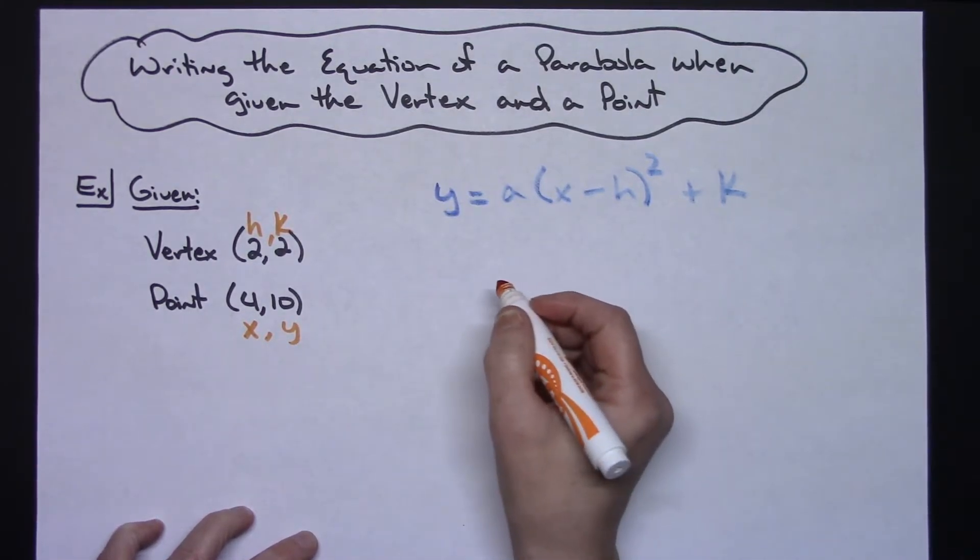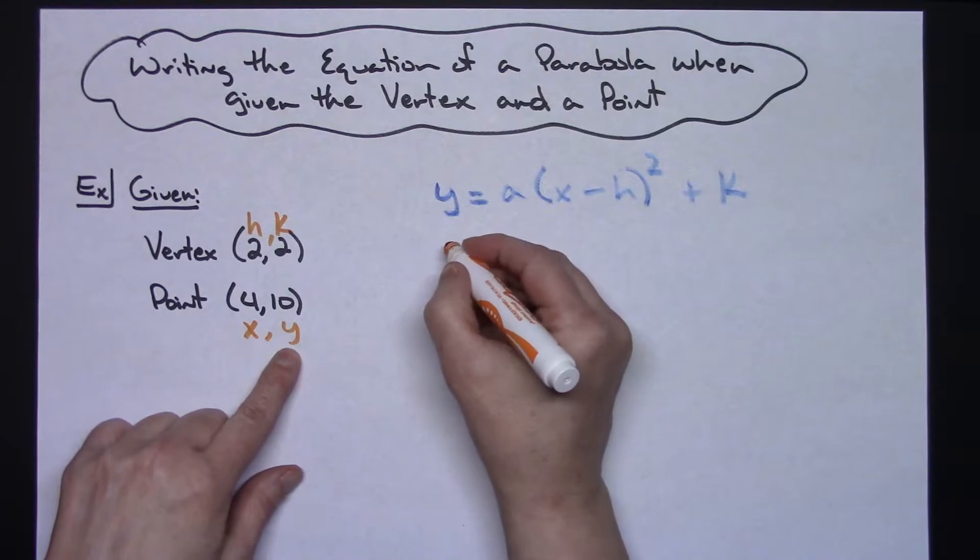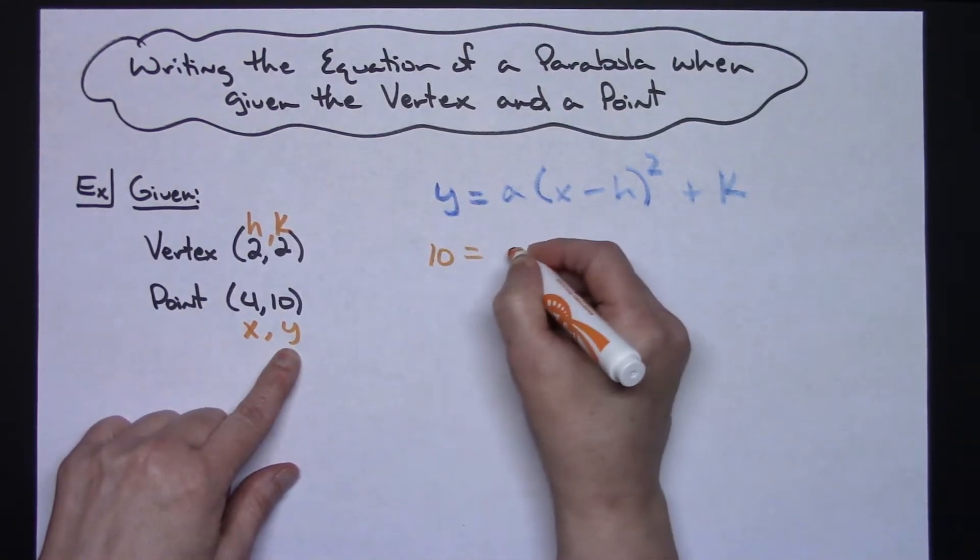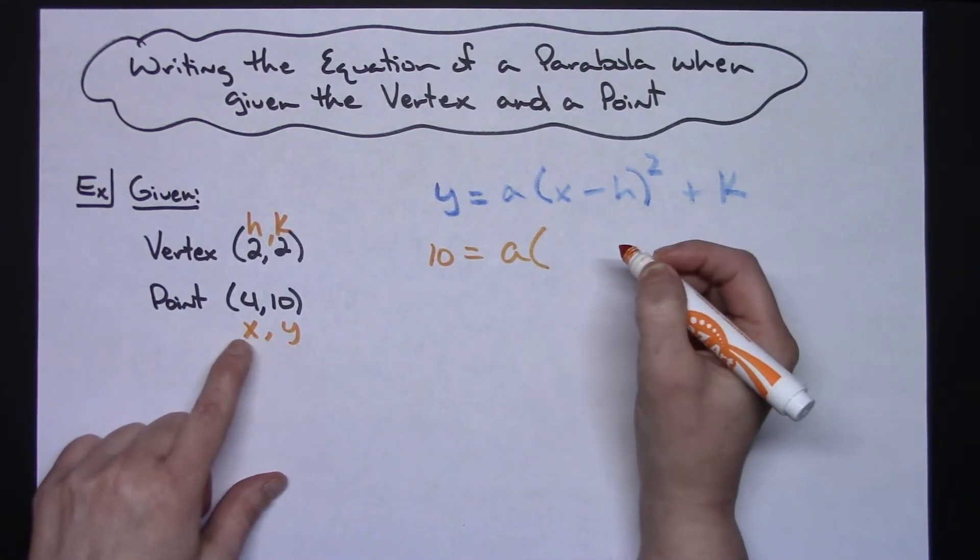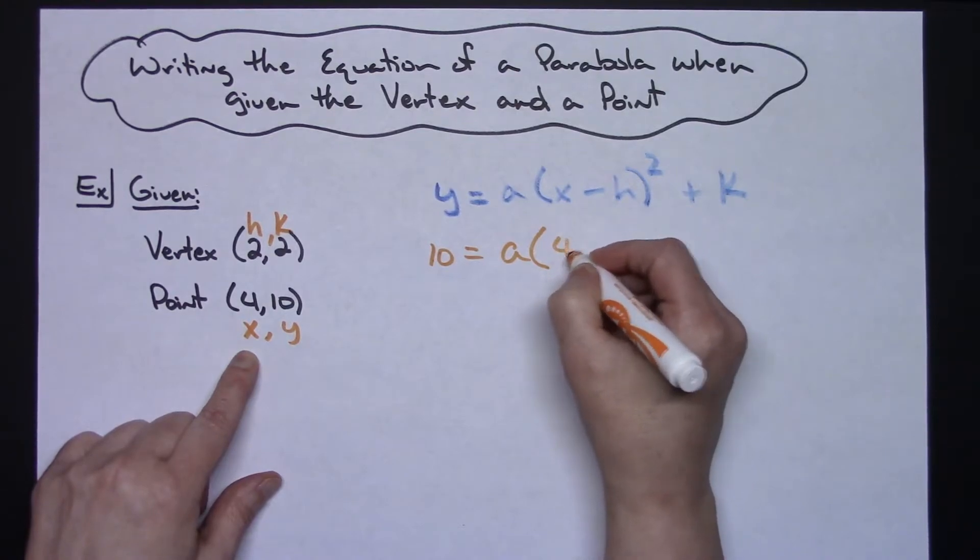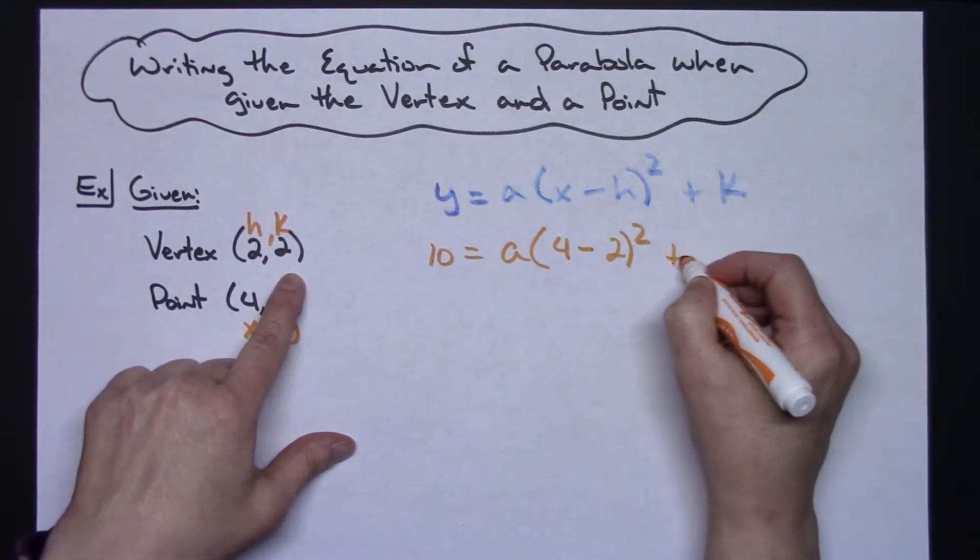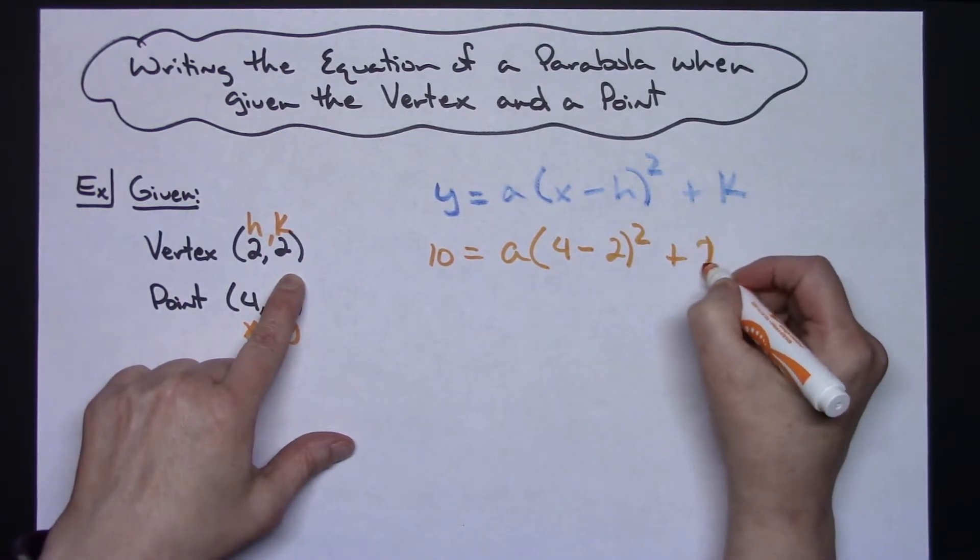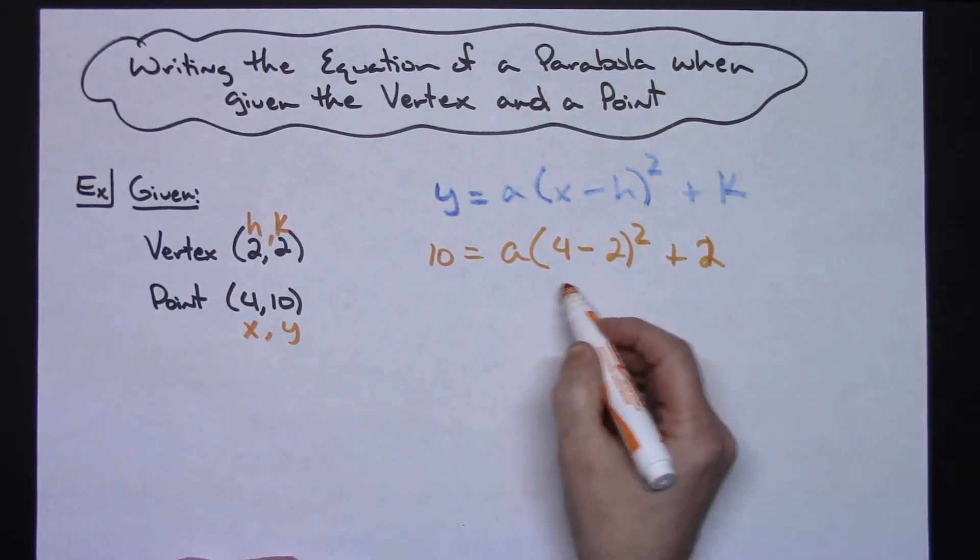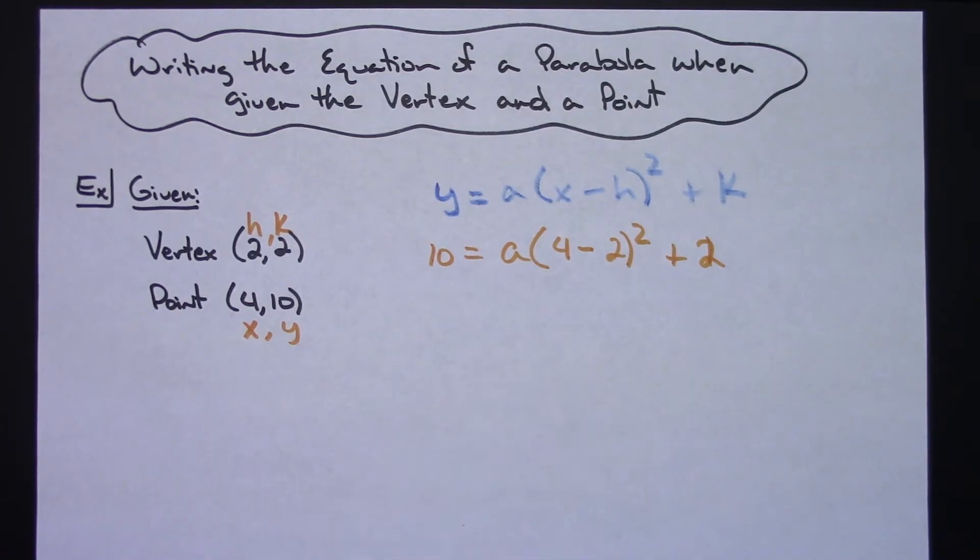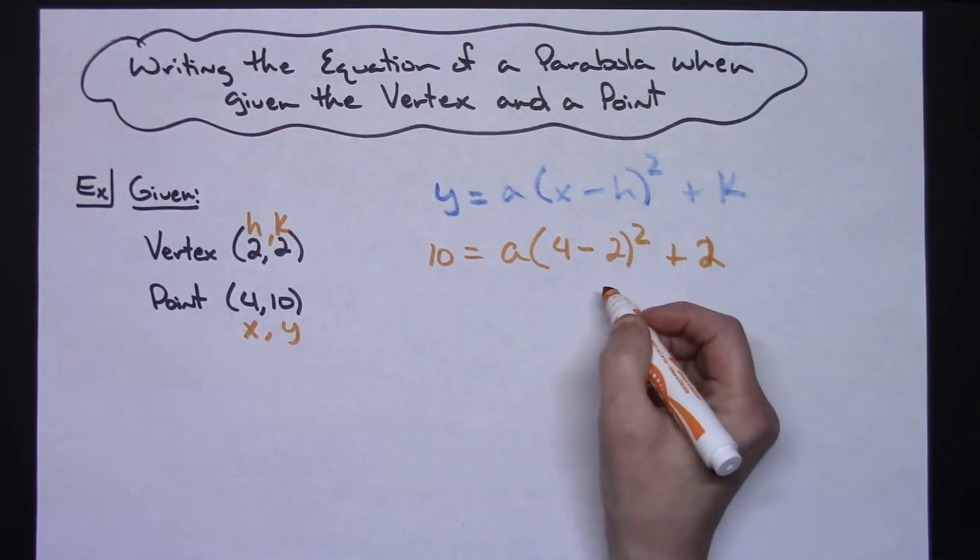I'm going to do some substituting here. I'm going to substitute 10 in for y. I don't know a, I'm going to solve for that. My x is 4, my h is 2, that's quantity squared, and then plus my k value which is 2. It's a matter of then just solving for a so that we know what that leading coefficient is going to be.